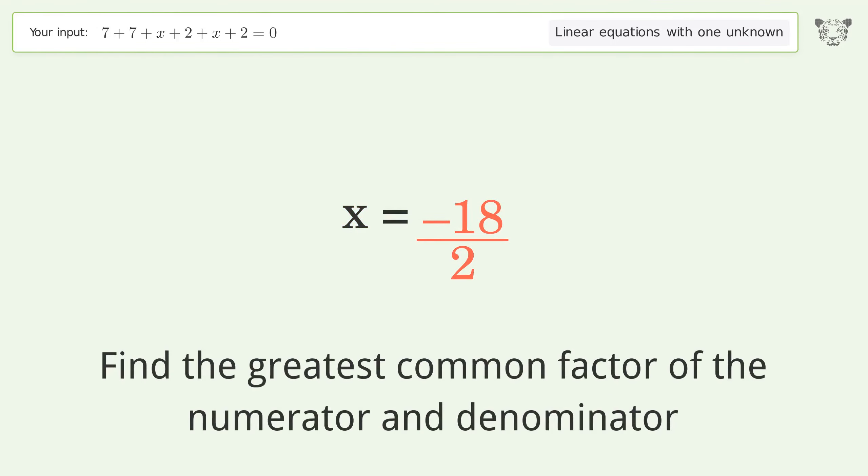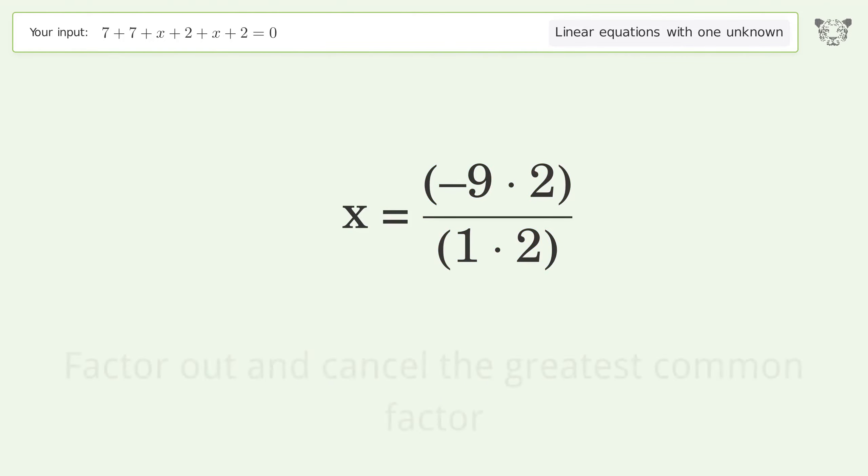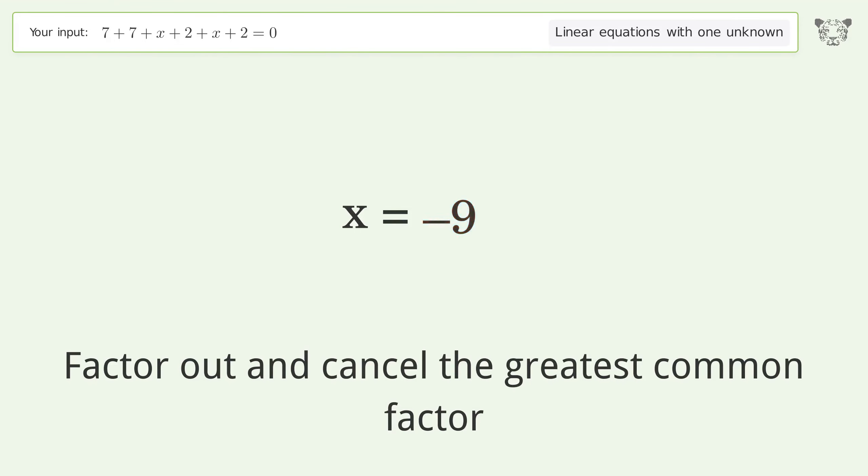Find the greatest common factor of the numerator and denominator. Factor out and cancel the greatest common factor. And so the final result is x equals negative 9.